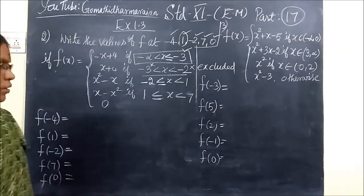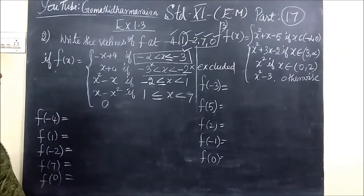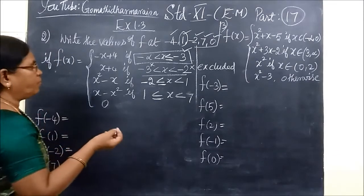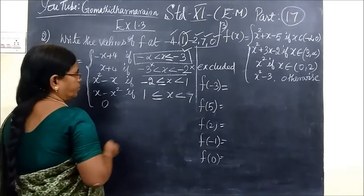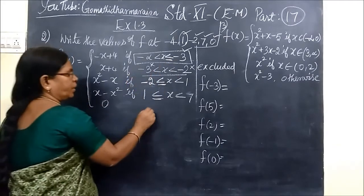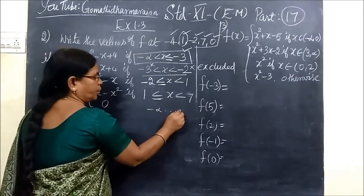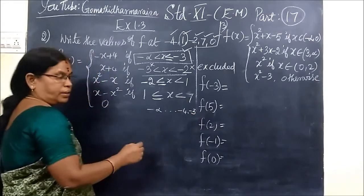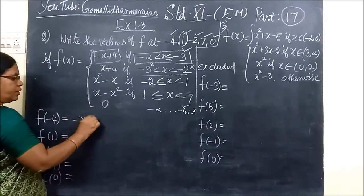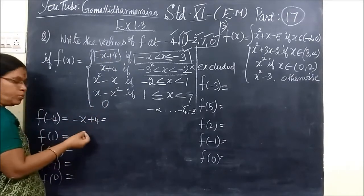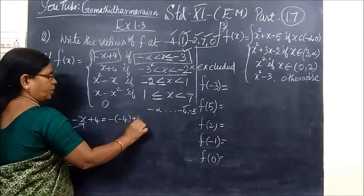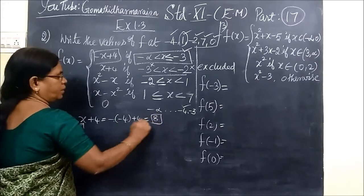Now we see the problem: f of minus 4. Where does minus 4 come? Because minus infinity, then minus 4, then minus 3 — so here minus 4. So you are taking the value minus x plus 4. Now you substitute the x value: for x you are substituting minus 4, plus 4. Minus minus is plus. So the answer is 8.